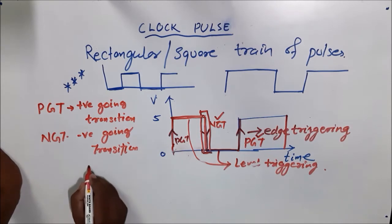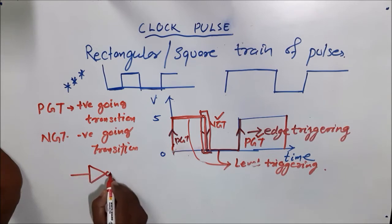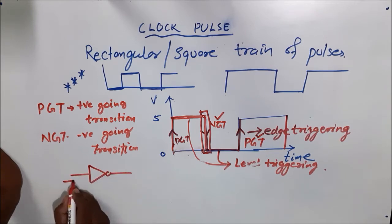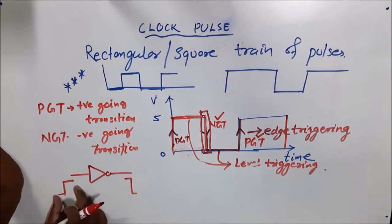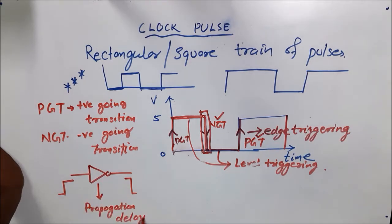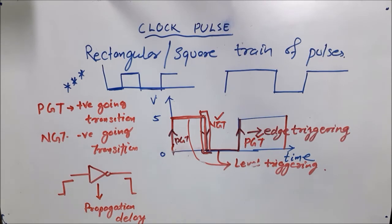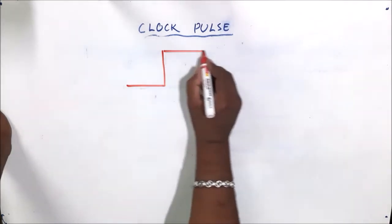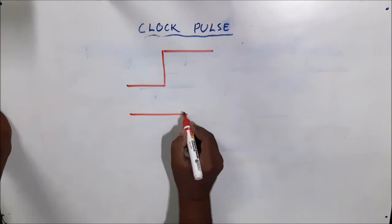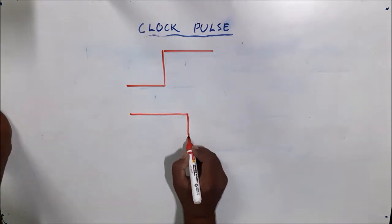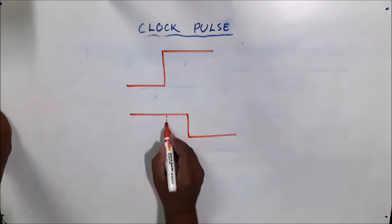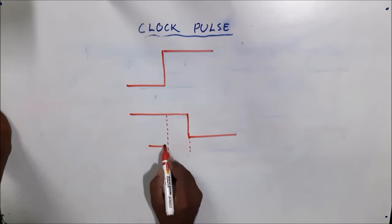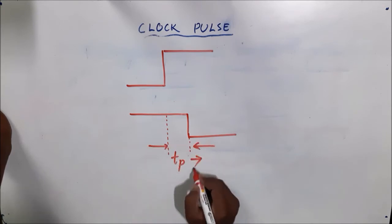For example, this is my inverter. If I apply a high pulse here — a high transition — the output should go low. But to reflect this input into the output terminal, the inverter takes some time. That is called propagation delay. Propagation delay is the minimum amount of time to reflect the input into the output. Representing it diagrammatically, this time interval is called tp — that is called propagation delay.